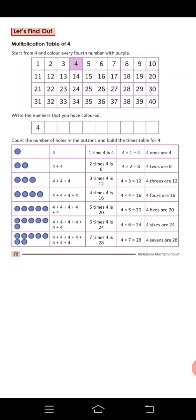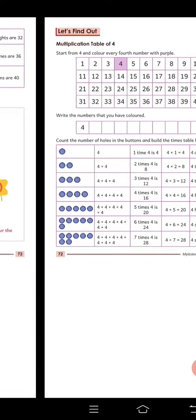Now, what do you have to do? Count the number of holes in the buttons and build the times table of 4. 4 times 1 is equal to 4. 4 multiply 3 is equal to 12. This is the way you have to do it. Next page is,